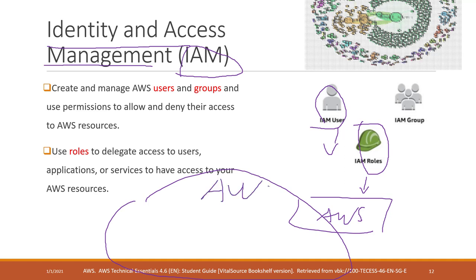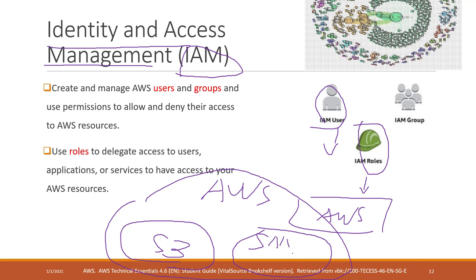In our case, we have S3 on AWS to host our data, and SageMaker which has a notebook. If we want to use Jupyter Notebook to access the data from S3, we need IAM to authorize the notebook. We need to allow the notebook to access data in S3, so we use IAM to grant the notebook permission to read and also write data into S3.